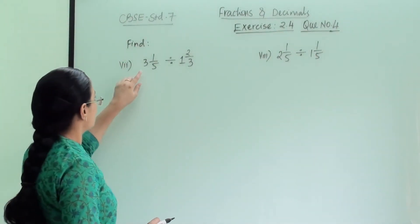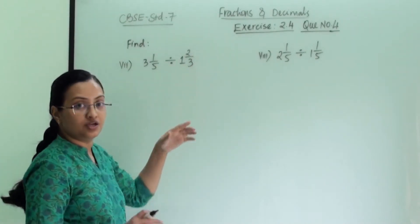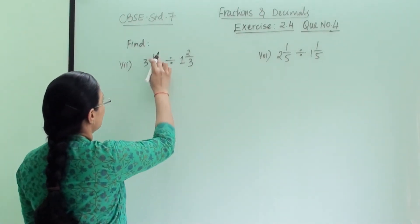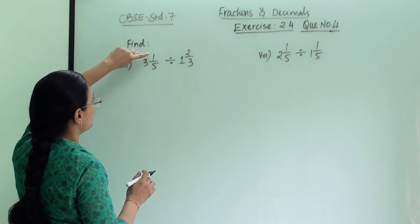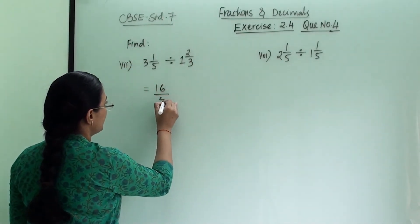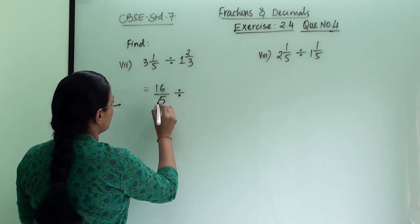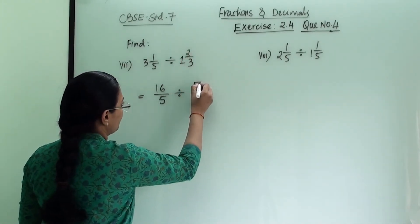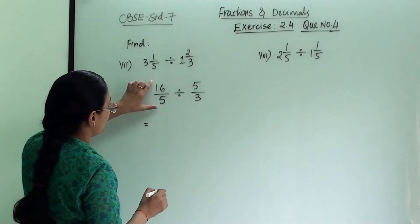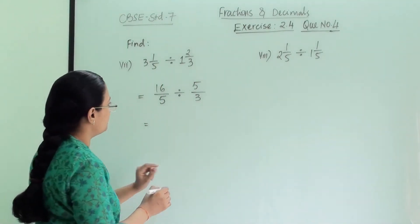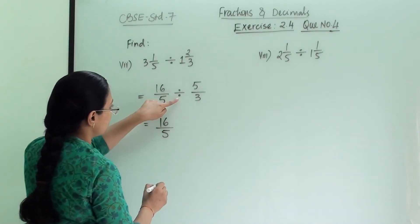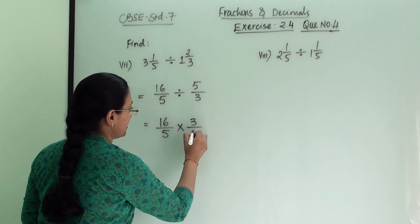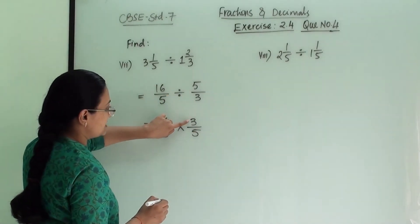The seventh numerical is 3 and 1 by 5 in division with 1 and 2 by 3. Both are mixed fractions, so we convert them to improper fractions. 3 and 1 by 5: 3 into 5 is 15 plus 1 is 16, so 16 by 5. 1 and 2 by 3: 1 into 3 is 3 plus 2 is 5, so 5 by 3. Now we have 16 by 5 divided by 5 by 3. We convert division to multiplication and take the reciprocal of 5 by 3, which is 3 by 5.